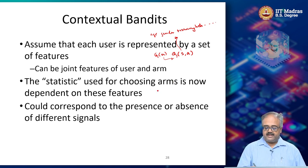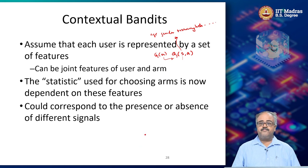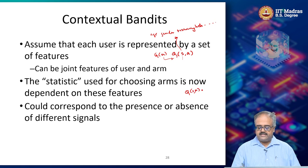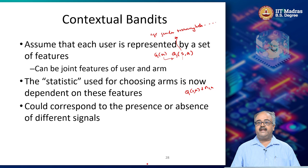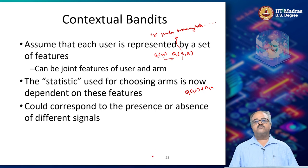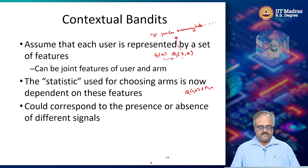The statistics you use for choosing the arm, which is Q, will now be dependent on the context. So you need Q(S, A) and N(S, A). Earlier you had N(A), now you have N(S, A), which is the number of times you have taken action A when the context was S.